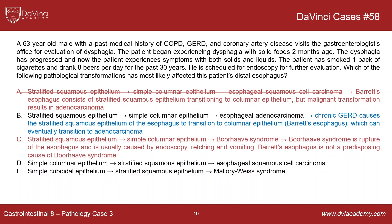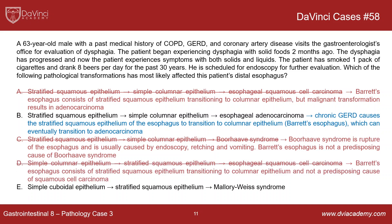Choice C is correct in the first part — stratified squamous epithelium transitioning to simple columnar — but this doesn't put you at risk for Borhoff syndrome, which is rupture of the esophagus. In the vast majority of cases this is actually caused by endoscopy, but it can also be seen in people with retching and vomiting, bulimia, or very severe alcoholics. Barrett's esophagus is not a predisposing factor for Borhoff syndrome. Choice D isn't correct: the esophagus epithelium is not simple columnar epithelium, and esophageal squamous cell carcinoma is not caused by some type of transition — it's due to chronic insults to the epithelium.